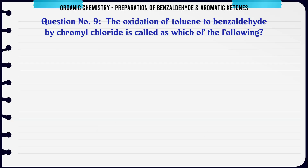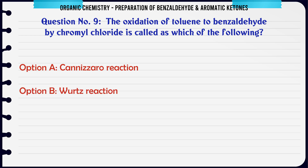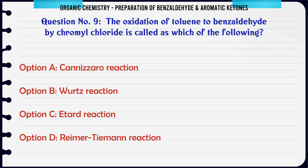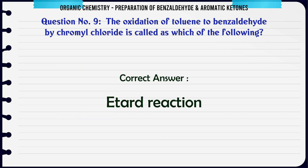Oxidation of toluene to benzaldehyde by chromyl chloride is called which of the following? A. Cannizzaro reaction. B. Wurtz reaction. C. Etard reaction. D. Reimer-Tiemann reaction. The correct answer is Etard reaction.